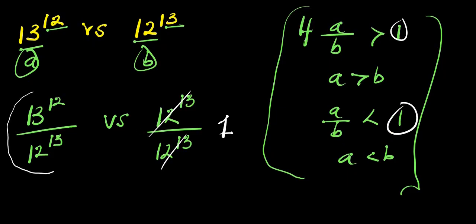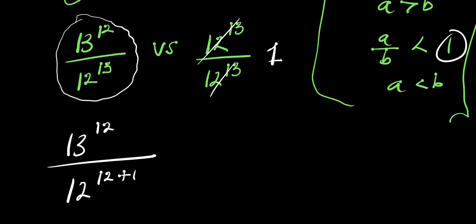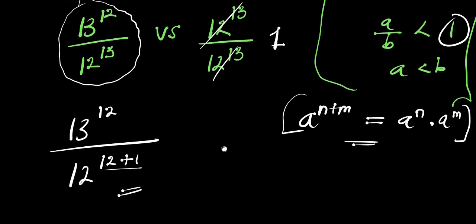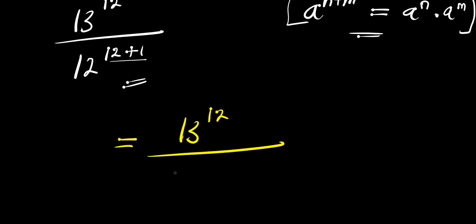From here on we concentrate on determining if 13^12 divided by 12^13 is greater than or less than 1. We express 12^13 as 12^(12+1), since 12 plus 1 equals 13. Using the identity A^(N+M) = A^N × A^M, we rewrite the expression as 13^12 divided by (12^12 × 12^1).